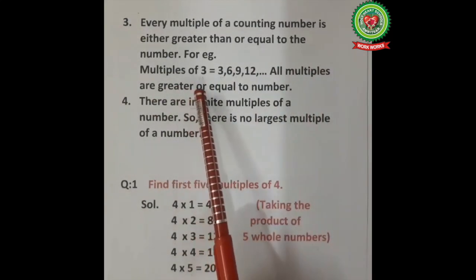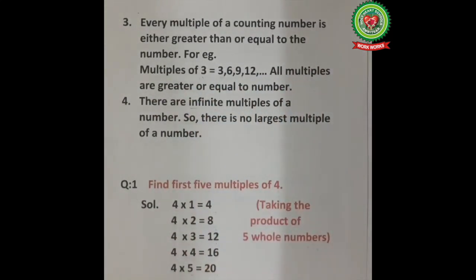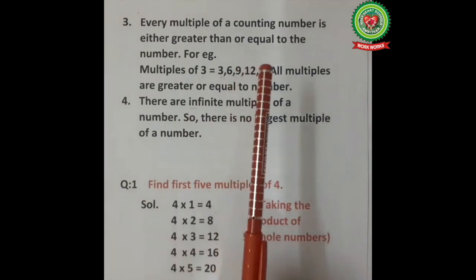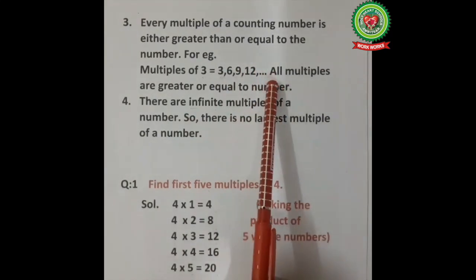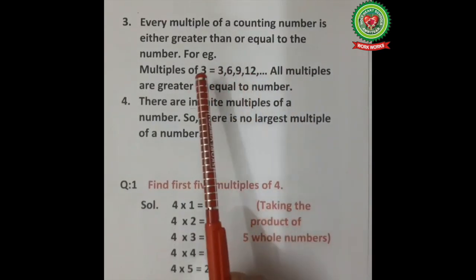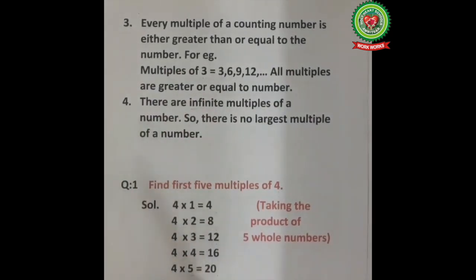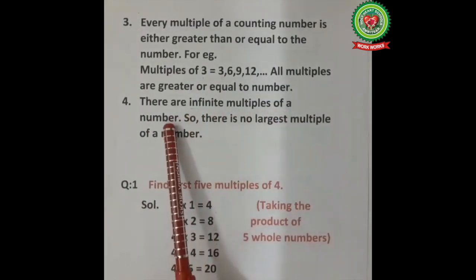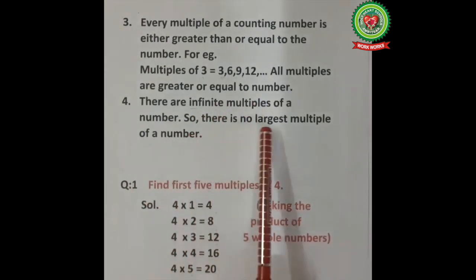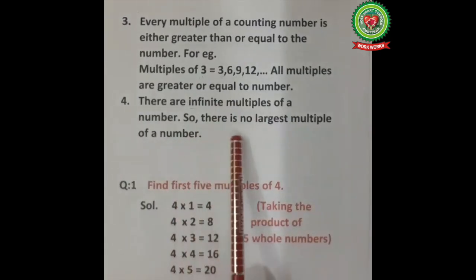Property three: every multiple of a counting number is either greater than or equal to the number — it will not be smaller than the given number. For example, multiples of 3 are 3, 6, 9, 12, and so on. All multiples are greater than or equal to 3. Property four: there are infinite multiples of a number — infinite means uncountable — so there is no largest multiple of a number.